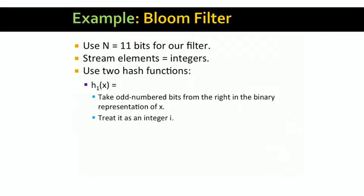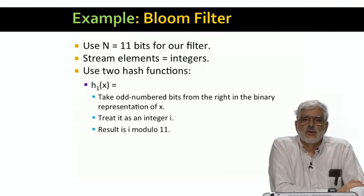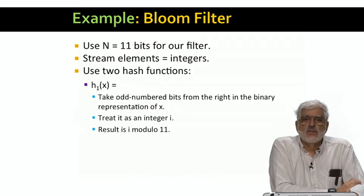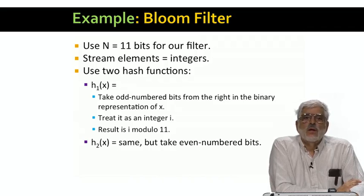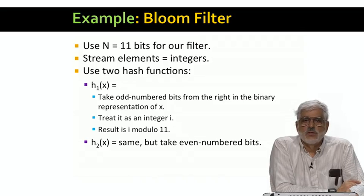Looking only at the odd position bits, we get another binary integer. Suppose that integer is i. And then compute i modulo 11, that is, the remainder when i is divided by 11. That's the value of h1 of x. h2 of x is computed in exactly the same way, but from the even positions of the binary representation of x.